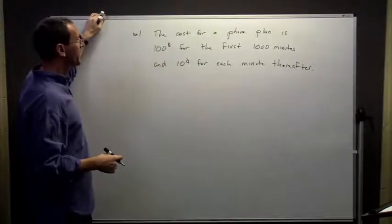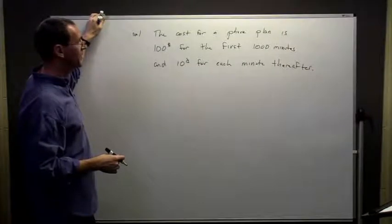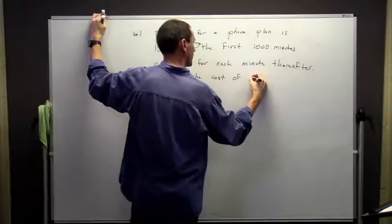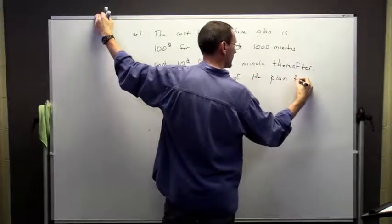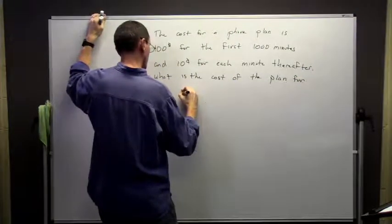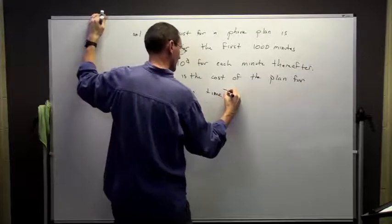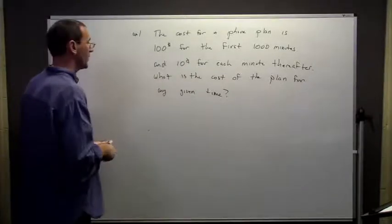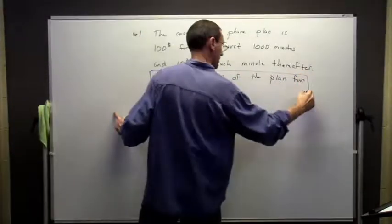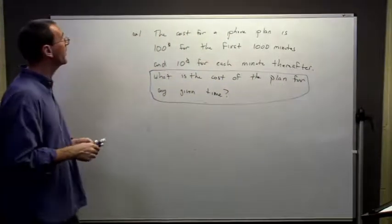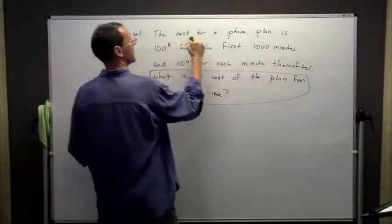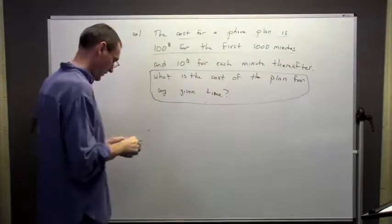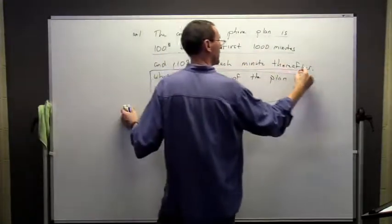The cost of a phone plan is $100 for the first 1,000 minutes and 10 cents for each minute thereafter. The question is: what's the cost of the plan for any given time? We're trying to figure out what the cost of the plan is. We have the cost is $100 for the first 1,000 minutes, and then 10 cents for each minute after that.